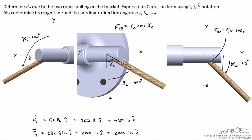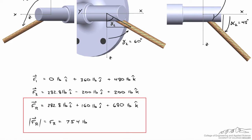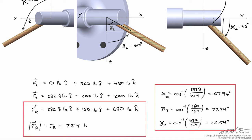Now that we've decomposed F1 and F2 into their x, y, and z components, we do the vector sum to get the resultant force FR. Using the Pythagorean theorem — the square root of the sum of squares — we get a magnitude of 754 pounds. The coordinate direction angles for FR are: alpha r from FRx over magnitude, beta r from FRy over magnitude, and gamma r from FRz over magnitude, giving approximately 68, 78, and 26 degrees.